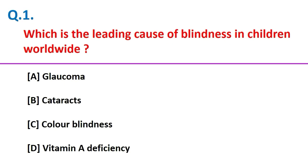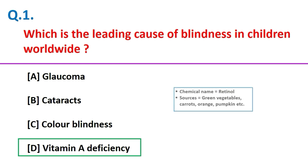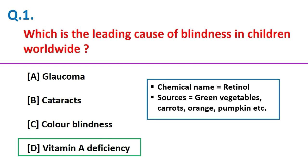Which is the leading cause of blindness in children worldwide? Vitamin A deficiency. Friends, the chemical name of vitamin A is retinol, and good sources are green vegetables, carrots, orange, pumpkin, etc.